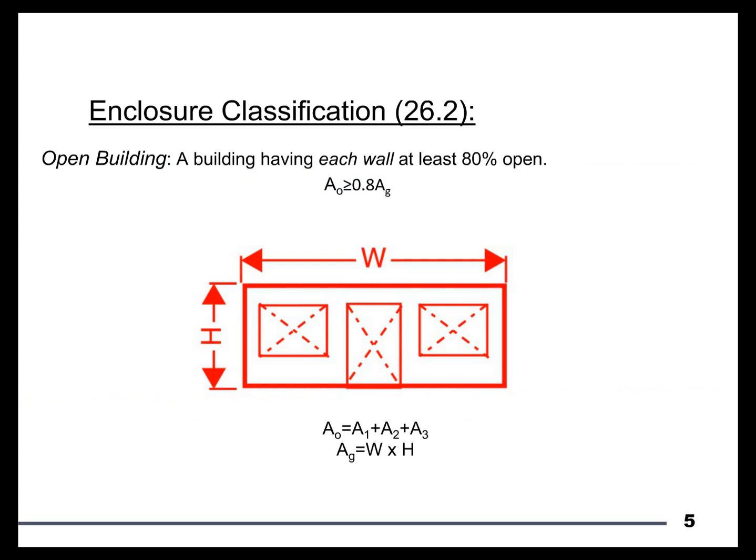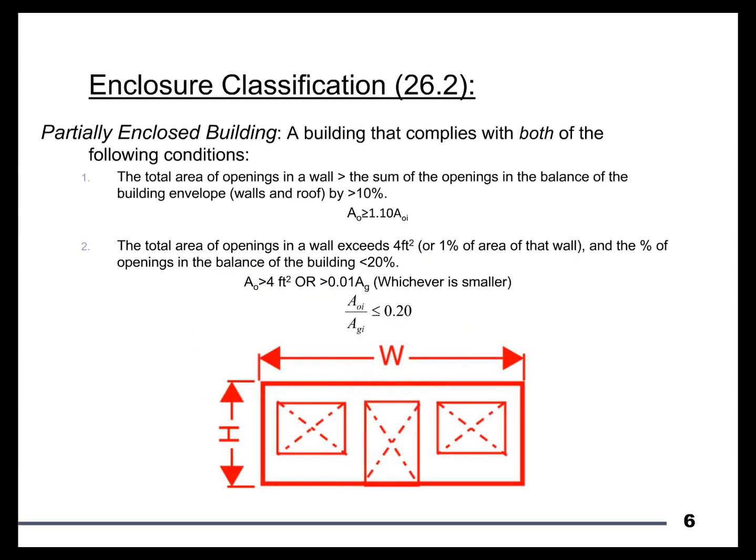So we go to the next definition within ASCE 7, which is Partially Enclosed. Before we dive in, I want to note that this is a two-part definition, and within each part there are finer points and sub-requirements. We'll try to keep it simple, but there are a lot of words and numbers here, so I'll ask for your patience as we work the problem — I think the definitions will become slightly more clear.